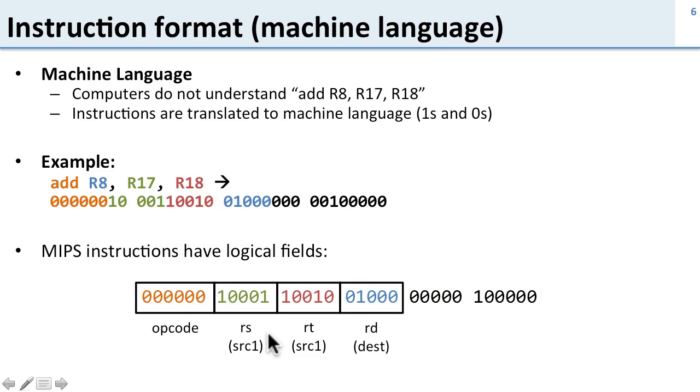Then we have a bunch of fields for the registers. You can see we have three fields here: two fields for the two source registers and one field for the destination register. Then we have some fields for other information—in this case, a shift amount and a function code.